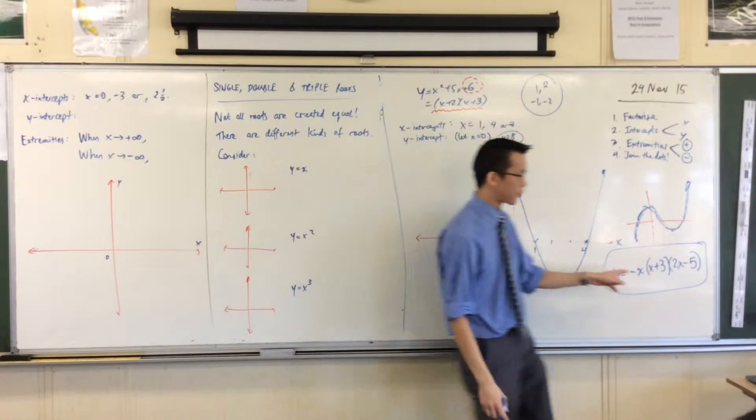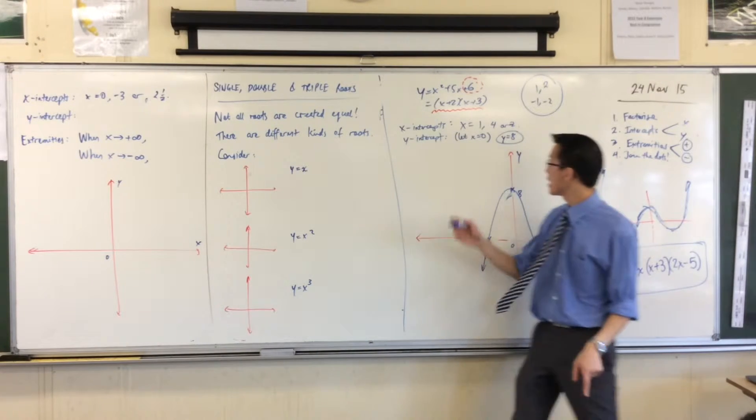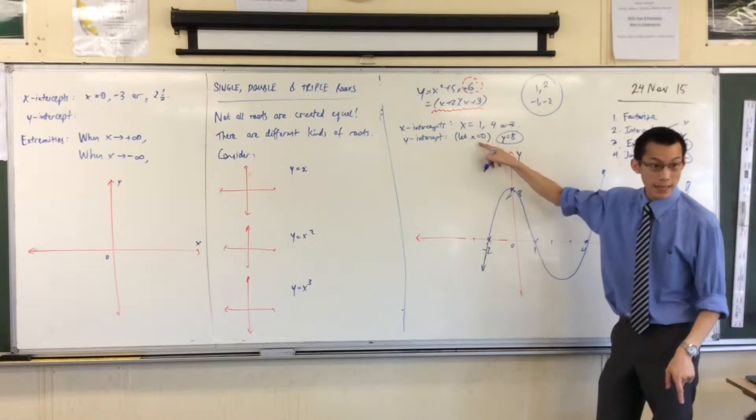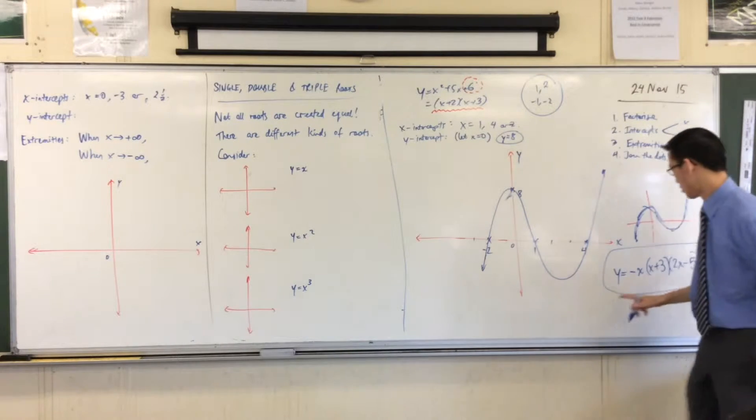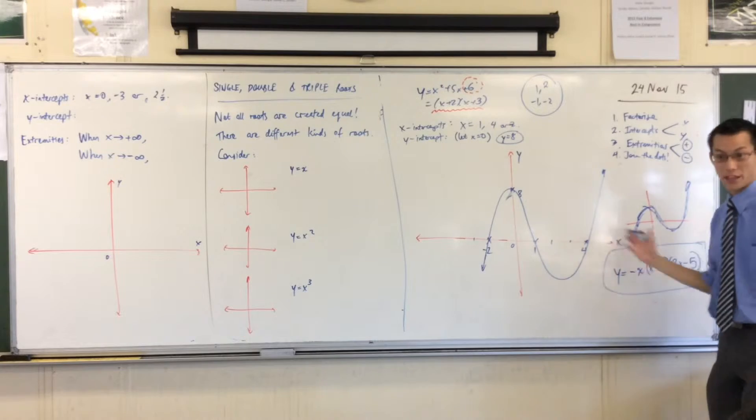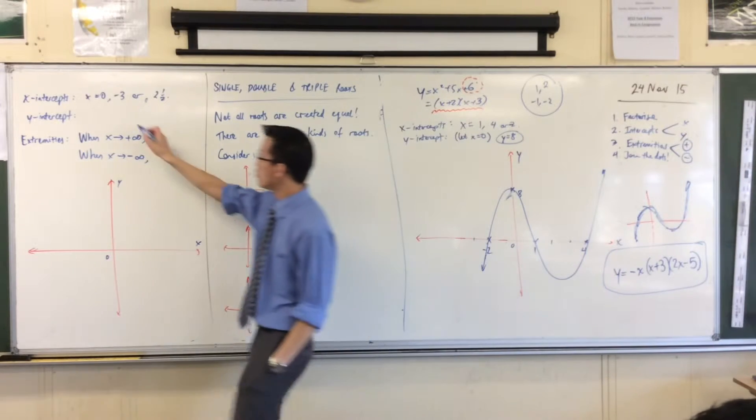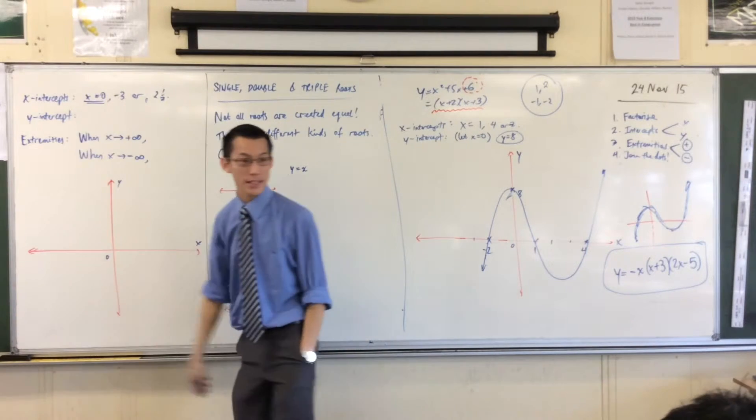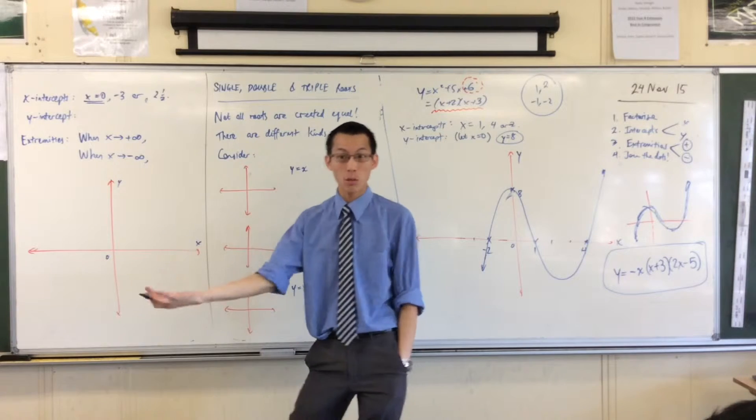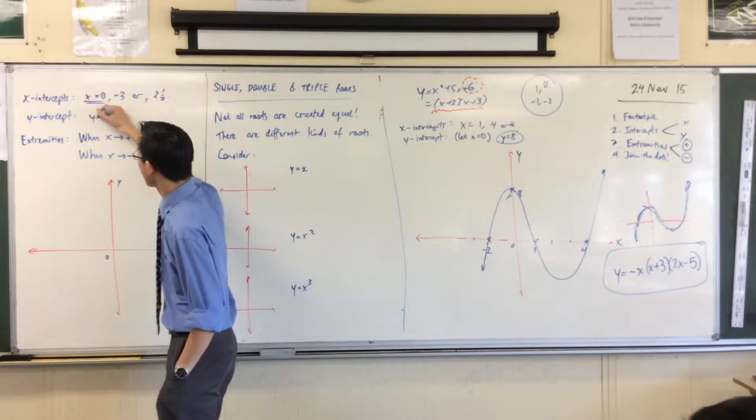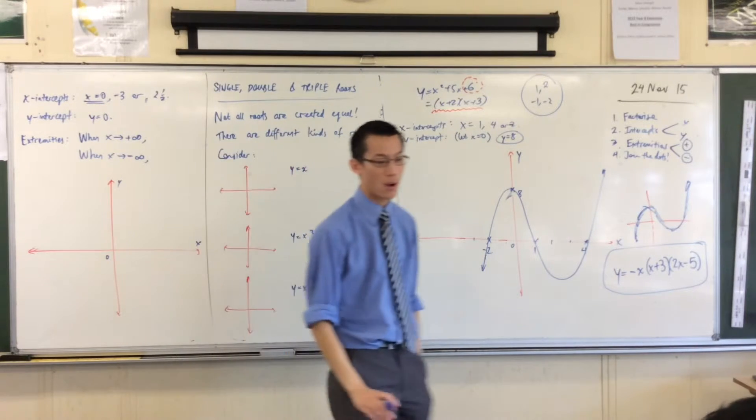Now, to find a y-intercept, remember I said, let x equals 0. Hold on. I've already worked out, if x equals 0, the whole thing is 0, right? So as soon as you see x equals 0 is an x-intercept, that's also a y-intercept. y equals 0, also an intercept there.